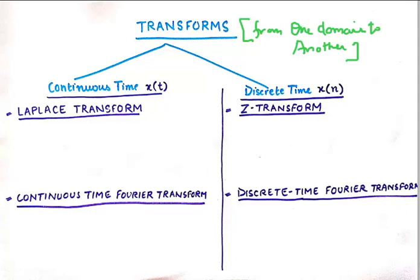The basic definition of a transform is an operation that takes us from one domain to another. That will give us the first differentiating criteria: we have transforms for continuous time signals and for discrete time signals.